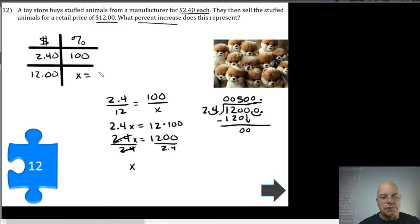And so x is equal to 500 percent. We have to be careful on a problem like this. It's not asking for what percent the $12 is. It's asking for the percent increase. It went from 100 to 500, so that's a percent increase of the difference, which is 400 percent.